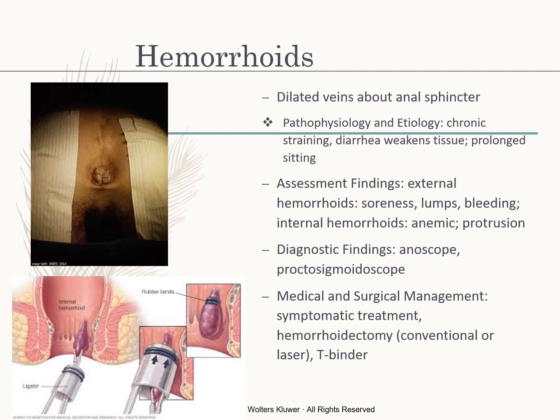Hemorrhoids are dilated veins in or outside the anal sphincter, caused by chronic straining, diarrhea, and prolonged sitting. Assessment findings include external hemorrhoids with soreness, lumps, and bleeding; internal hemorrhoids that can protrude; and anemia. Diagnostics include an anoscope and proctosigmoidoscopy.